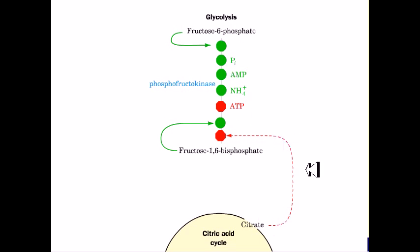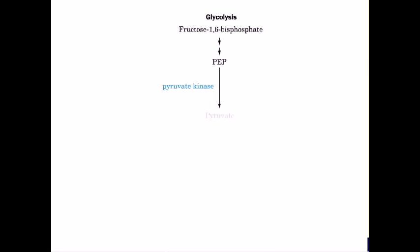In the last step of glycolysis, phosphoenol pyruvate is converted to pyruvate by pyruvate kinase. This reaction is inhibited by the product ATP and is activated by substrate ADP.